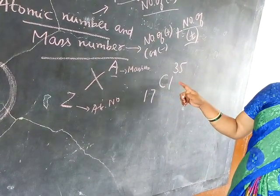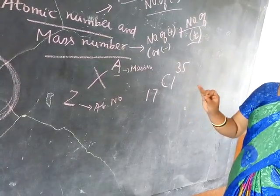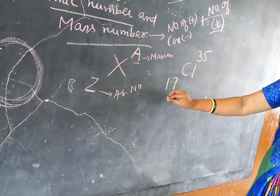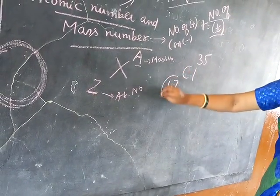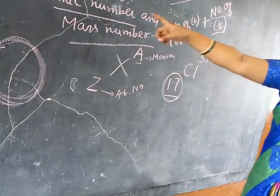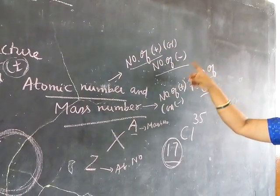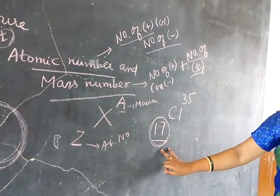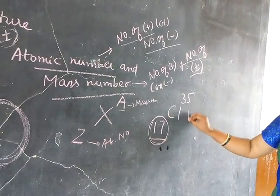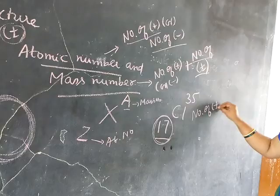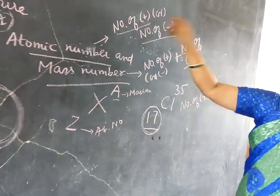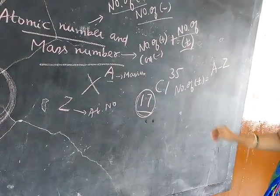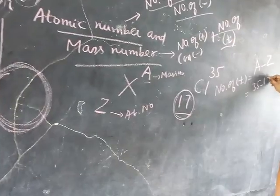Now I am asking you to calculate the number of protons, number of electrons, and finally number of neutrons. What is the number of electrons here? 17 — because 17 is the atomic number. Number of protons or number of electrons is the atomic number, so number of electrons is also 17. For calculating number of neutrons, we subtract mass number minus atomic number — that is A minus Z. So 35 minus 17 is 18.